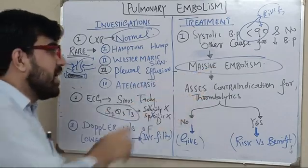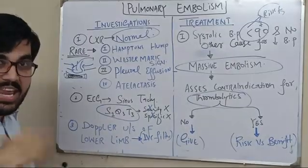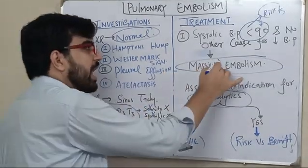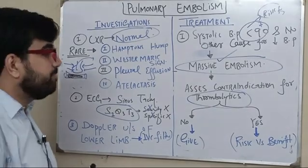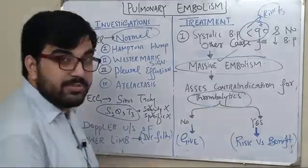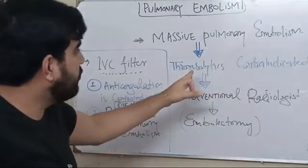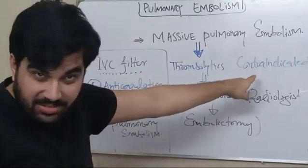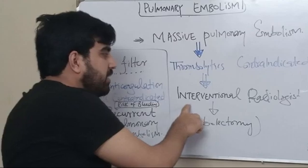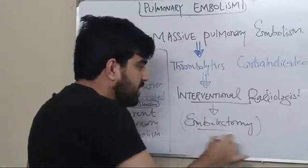If you have diagnosed massive pulmonary embolism, the best next step is to assess contraindications for thrombolytics, because you need to dissolve the clot. If there are no contraindications, give thrombolytics. If thrombolytics are contraindicated due to risk of bleeding, refer to an interventional radiologist for catheter embolectomy to remove the embolus through a catheter.